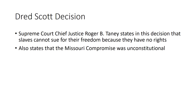Another issue that hurt the relationship between the North and South was the Dred Scott decision. Dred Scott was a slave who sued for his freedom because he had moved from a slave territory to a free territory, believing under the Missouri Compromise that he should be free because he crossed the 36°30' parallel. Supreme Court Chief Justice Roger B. Taney ruled that slaves had no right to sue because they had no rights — they were not citizens and were not seen as people. He also stated that the Missouri Compromise was unconstitutional and that no matter where a slave was born or moved, they were still a slave.